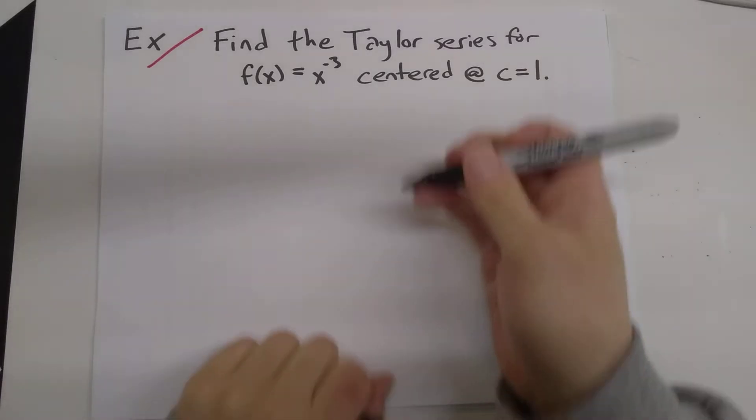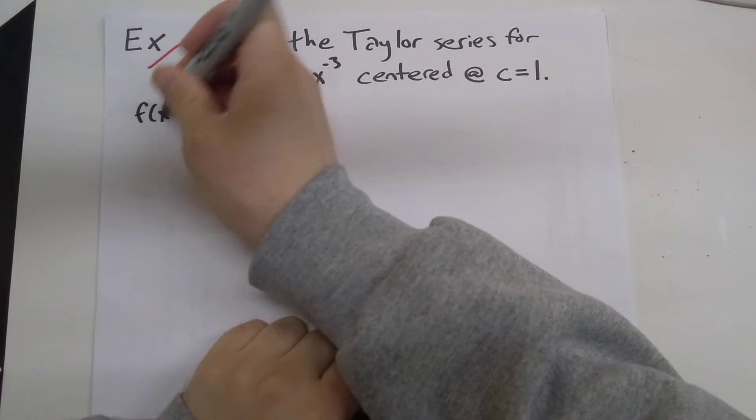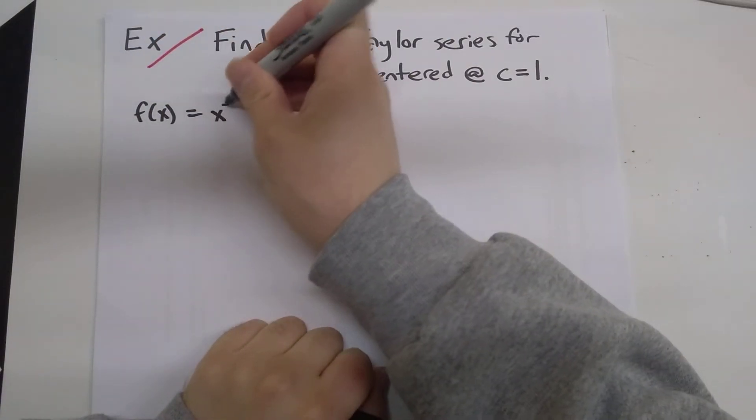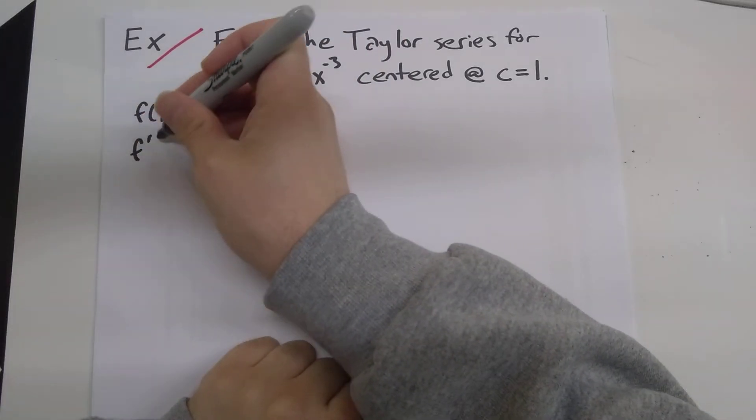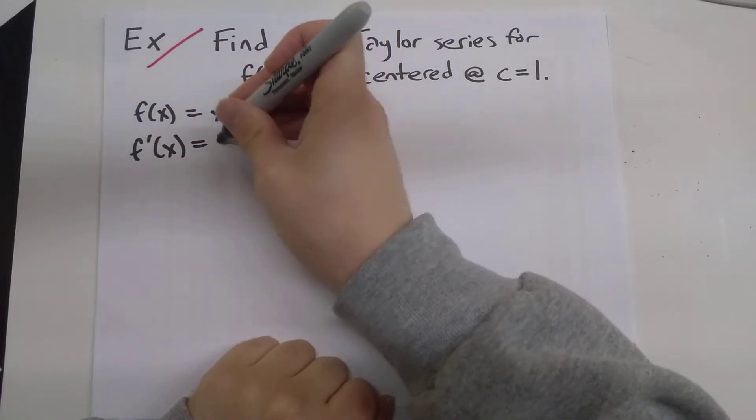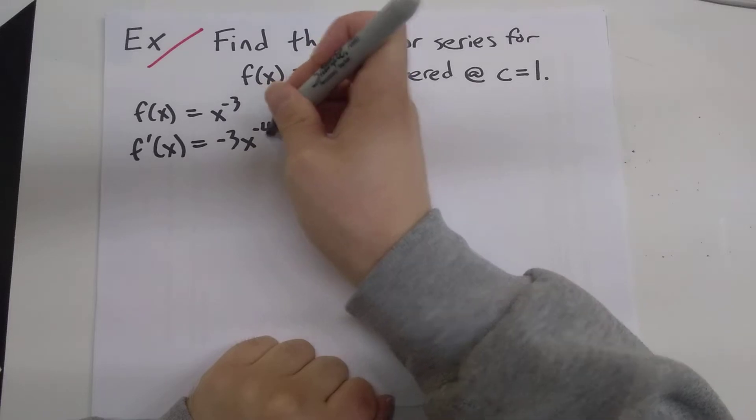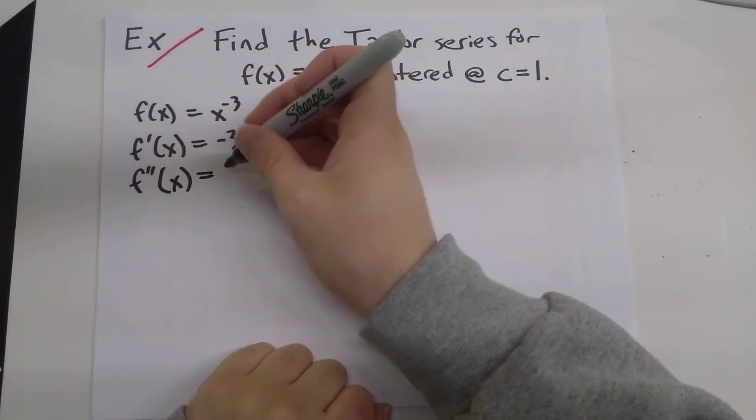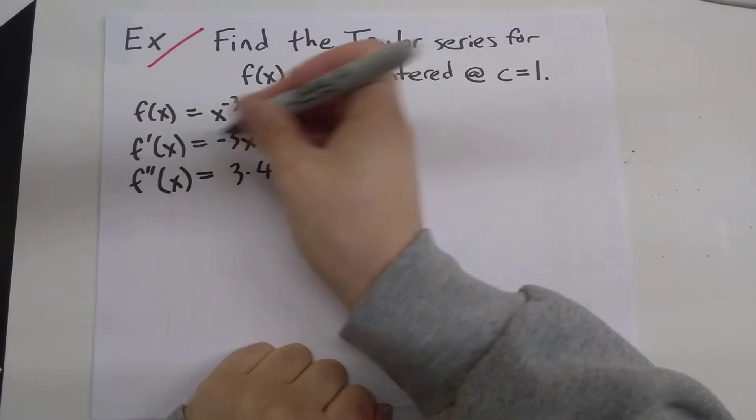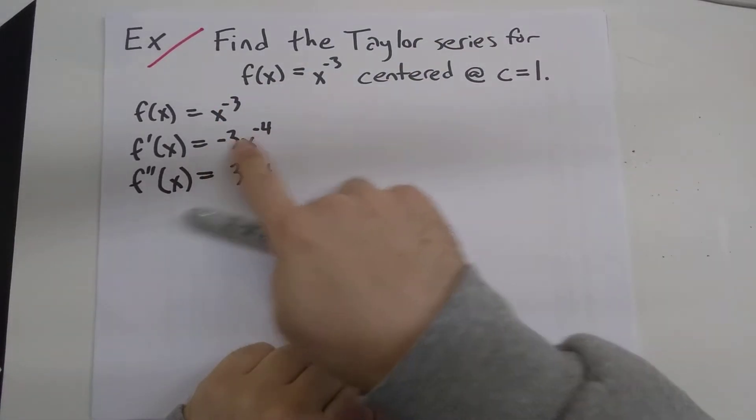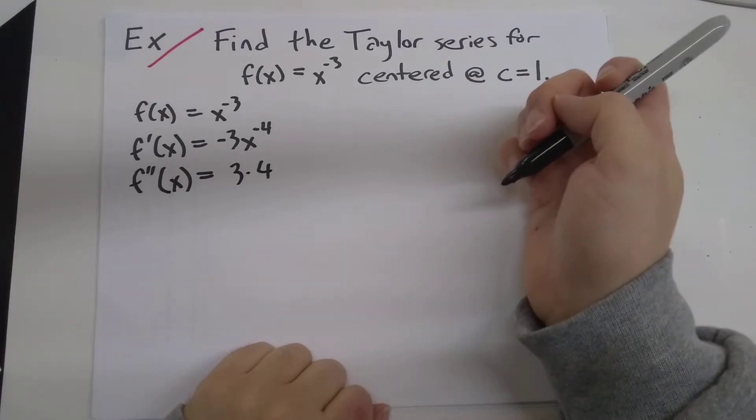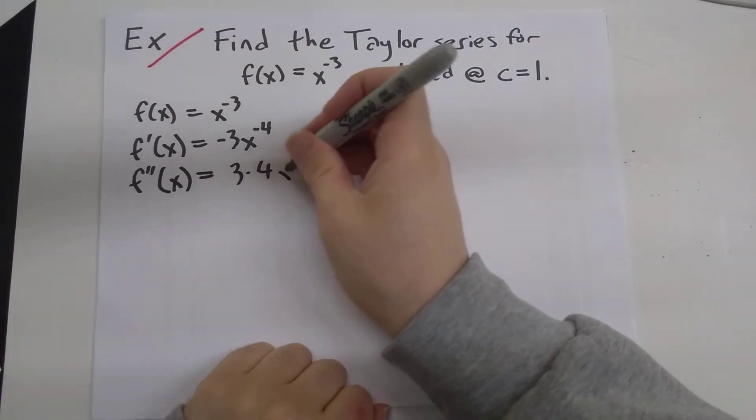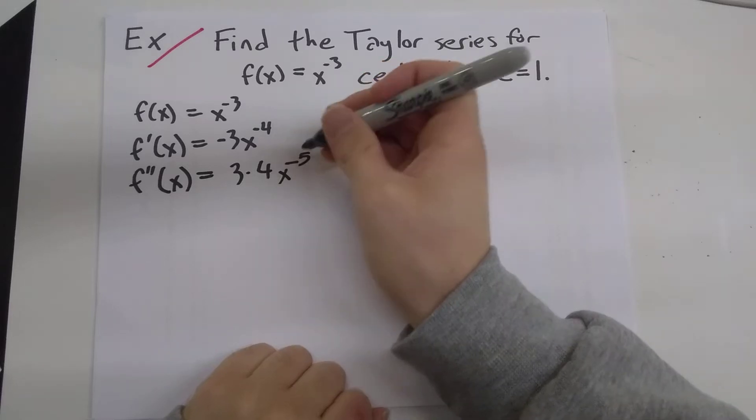Okay, so f of x is x to the minus 3. f prime of x, the first derivative, is minus 3x to the minus 4. f double prime of x is 3 times 4. I'm bringing down that minus 4. Those multiply together will give us 3 times 4, x to the minus 5.